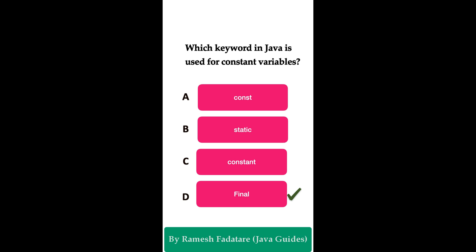Once a variable is declared with final, its value cannot be modified, effectively making it a constant. In Java, the final keyword makes a variable constant so that its value cannot be changed and no new value can be assigned to it.